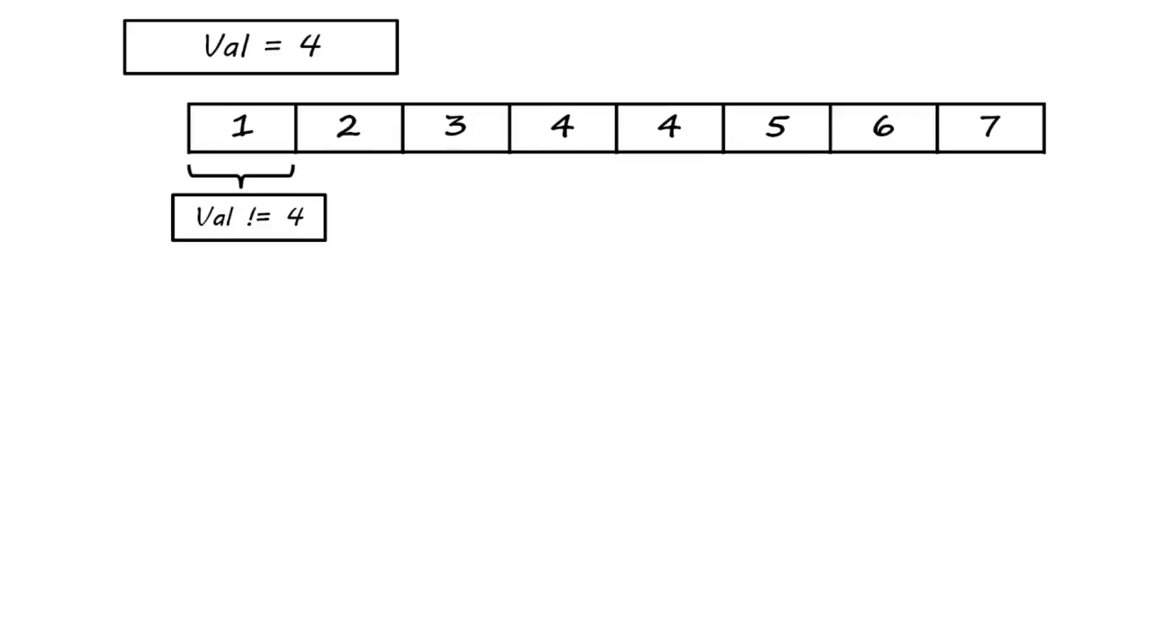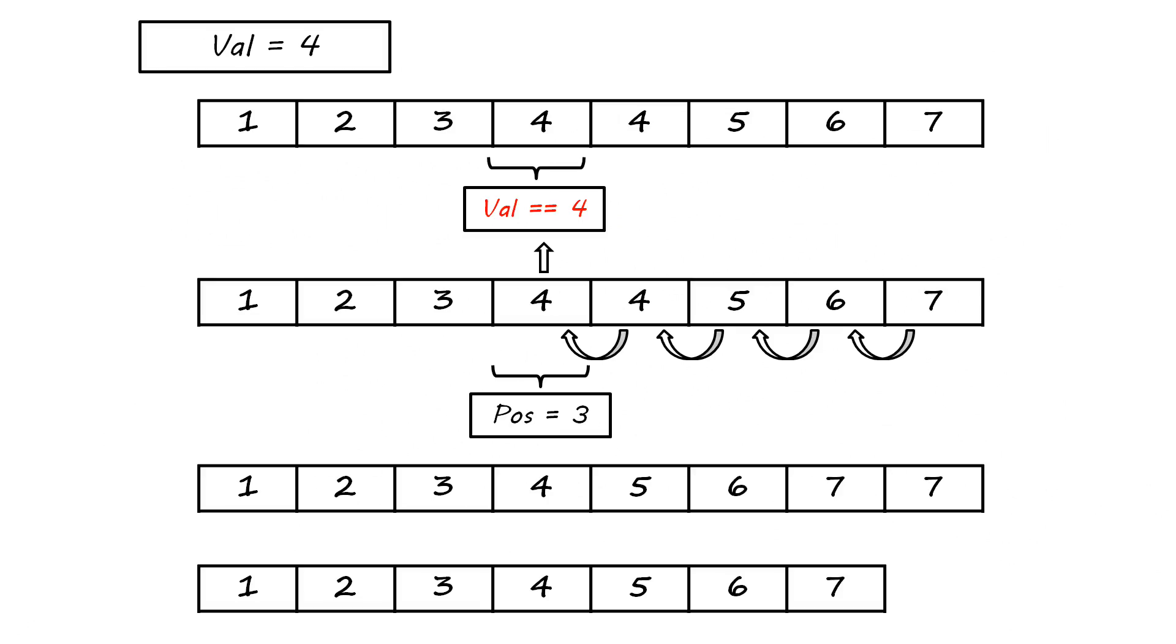Now, I will explain the first problem—that is, if we have the value val of the element that we want to delete. First we will start comparing each element of the array with val starting from the first element. The moment we will find the element equal to val, we get the position of val. Now, either we can store this position in a different variable pos or we can simply use the present value of counter itself. Then the following steps are similar to what we did previously.